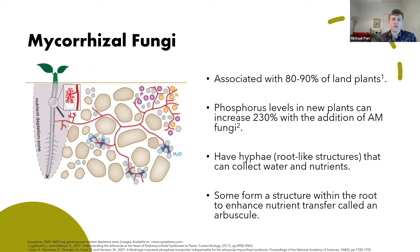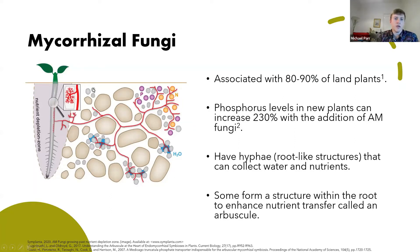Half a billion years covering the entirety of land plant history gives a lot of time for interesting co-evolution to happen. We see a structure called an arbuscule, which is like a root system created by the fungi that penetrates the root cells of the plant. This allows for a massive increase in nutrient transfer directly into the plant.